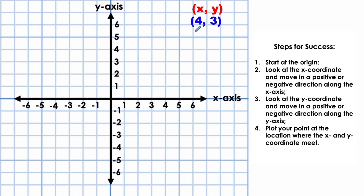In this case we have positive 4, so we're going to move positive 4 on the x-axis. The third step is to look at the y-coordinate — it's the second coordinate in the ordered pair — and move in a positive or negative direction along the y-axis. In this case we have positive 3, so we're going to move up positive 3 spaces. Your fourth and final step is to plot your point at the location where the x and y-coordinates meet. Right here is our point: 4 on the x and 3 on the y-axis.